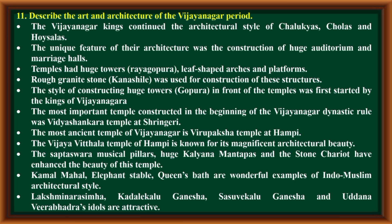The Vijayanagara temple at Hampi is known for its magnificent architectural beauty. The Saptaswara musical pillars, huge Kalyanamantapa, and the stone chariot have enhanced the beauty of this temple. Kamal Mahal, Elephant Stable, and Queen's Bath are wonderful examples of Indo-Muslim architectural style. Lakshmi Narasimha, Kadale Kalu Ganesha, Saswara Kalu Ganesha, and Udana Vira Badra idols are also attractive.